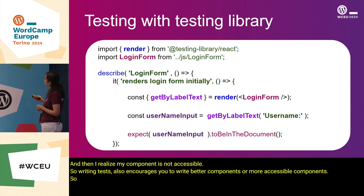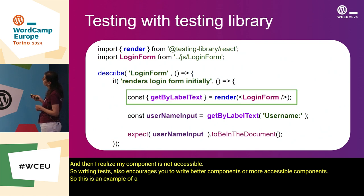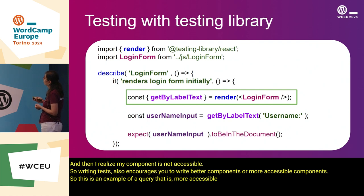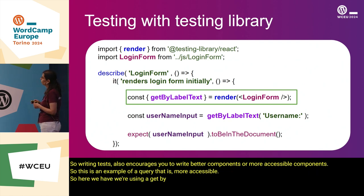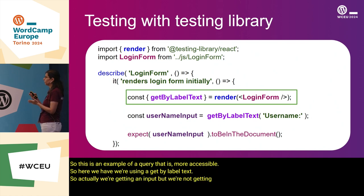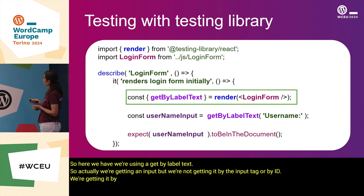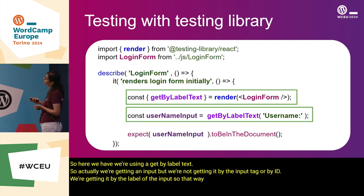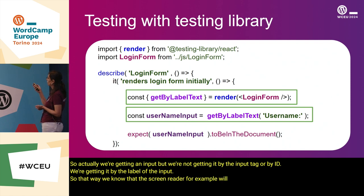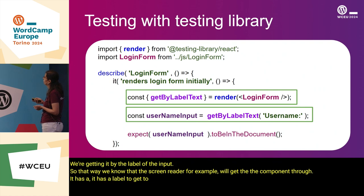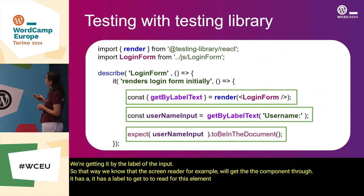Here's an example of an accessible query: we use getByLabelText — we're getting an input not by the input tag or ID, but by the label of the input. That way we know the screen reader will read the label for that element. So writing tests this way also encourages writing better, more accessible components.